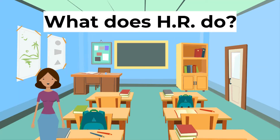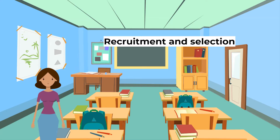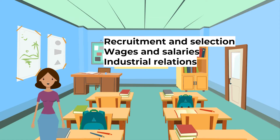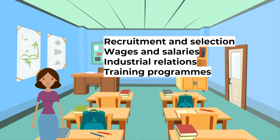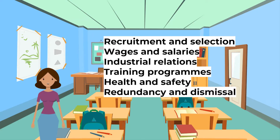Have you ever wondered what the role of the Human Resource or HR department is? The HR department does the following: recruitment and selection — attracting and selecting the best candidates for job posts; wages and salaries — setting wages and salaries that attract, retain and motivate employees; industrial relations — ensuring effective communication between management and the workforce to solve complaints, disputes and discuss ideas; training programs — giving employees training to increase their productivity and efficiency; health and safety — ensuring all laws on workplace conditions are adhered to; and redundancy and dismissal — dismissing unsatisfactory or misbehaving employees and making them redundant if they are no longer needed.